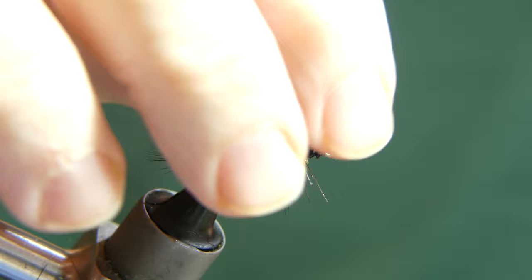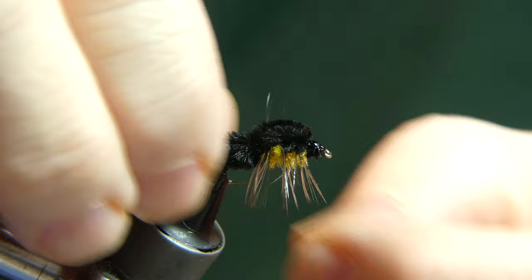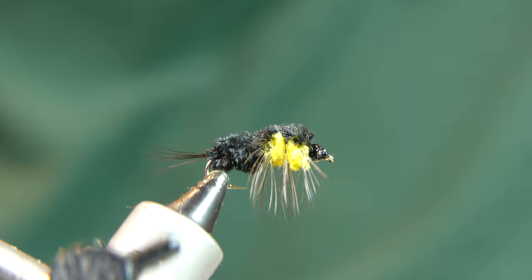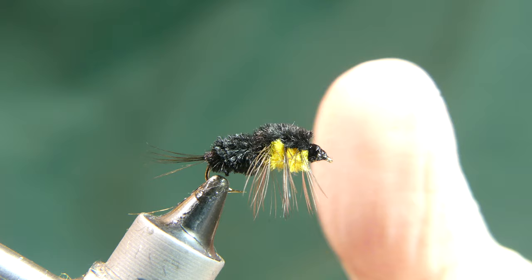And there you have it, a Montana Nymph, very similar to the ones I found in my father's fly box. Like I said, he had five or six in there, and they all were decayed to some point, but they're very recognizable as a Montana Nymph. If you like this fly pattern, if you like these videos, give me a thumbs up, give me a subscribe. I'll see you next time with some more fly tying.